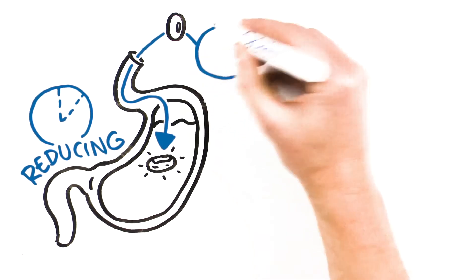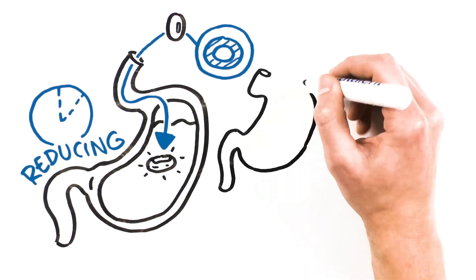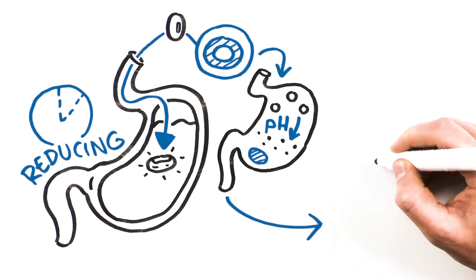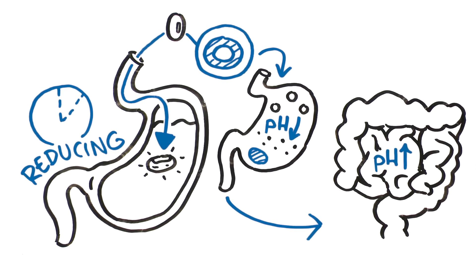OptiGel DR soft gel technology protects these ingredients because the shell does not dissolve in the acidic environment of the stomach, but does dissolve in the higher pH environment of the intestines, releasing the nutrients where they're absorbed by the body.